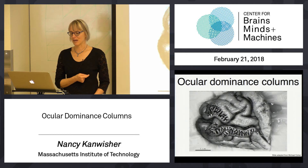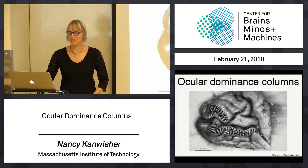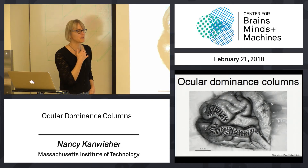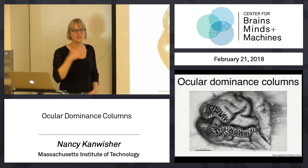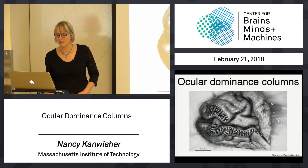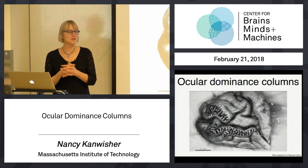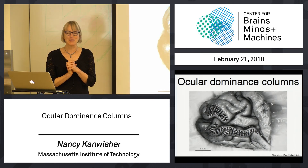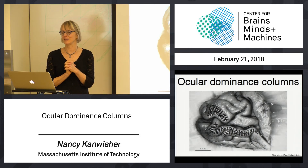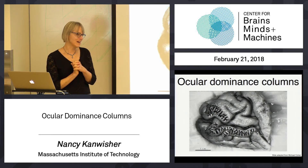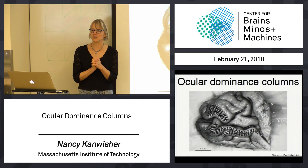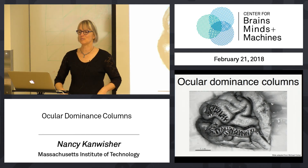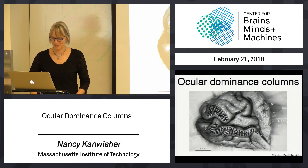So that's called ocular dominance columns. These are just properties that you will hear about of primary visual cortex. They're much studied and they're developmental — how you wire them up in development is a topic of great interest to many people. But there's a big mystery because nobody really knows why we have columnar organization of either orientation or ocular dominance.